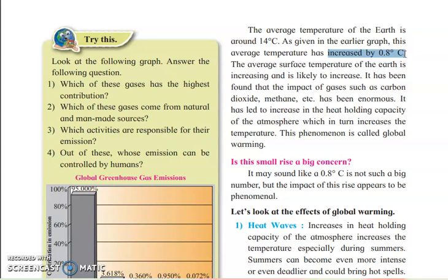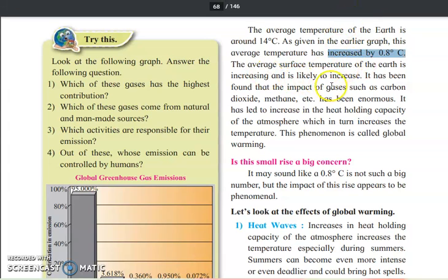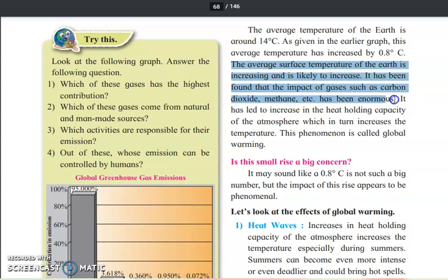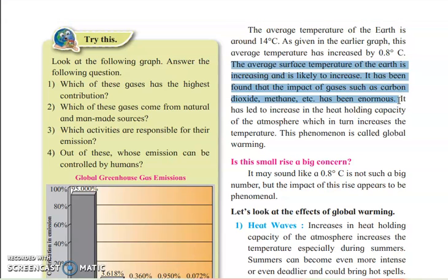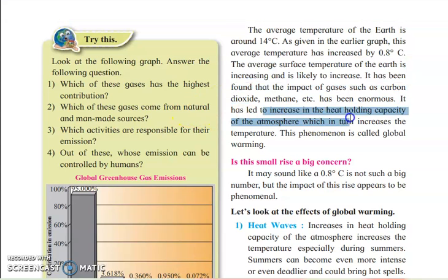You might think that 0.8 degrees Celsius is a very small amount, but it is not. It may feel like a small amount, but it is making a big impact on the earth. The average surface temperature of the earth is increasing and is likely to continue increasing, because of the impact of gases like carbon dioxide and methane. This has increased the heat-holding capacity of the atmosphere, which in turn increases the temperature — and this phenomenon is called global warming.